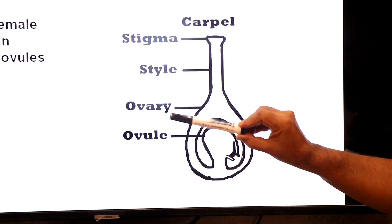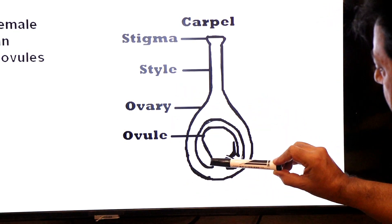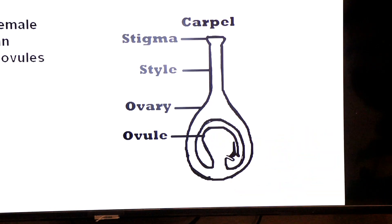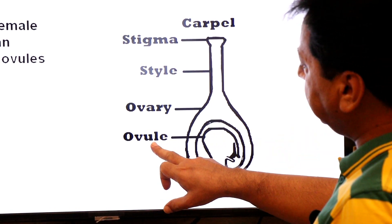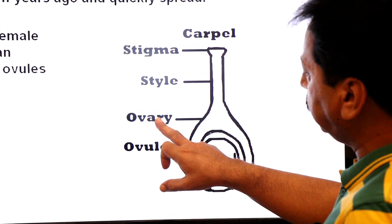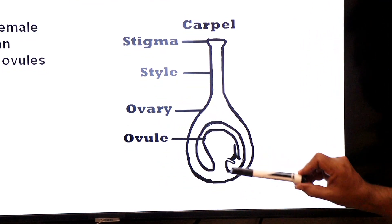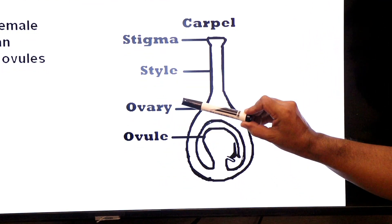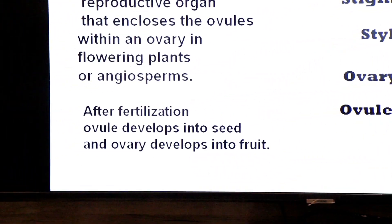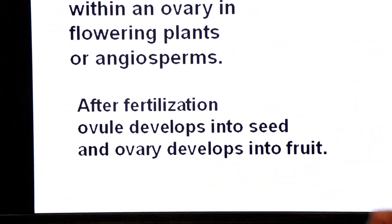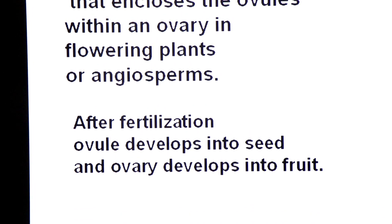After fertilization, ovary changes into fruit and the ovary contains one or more ovules. After fertilization, ovule changes into seed and ovary changes into fruit. That is why they are called covered seeded plants, because ovules are covered by ovaries. After fertilization, ovule develops into seed and ovary develops into fruit.